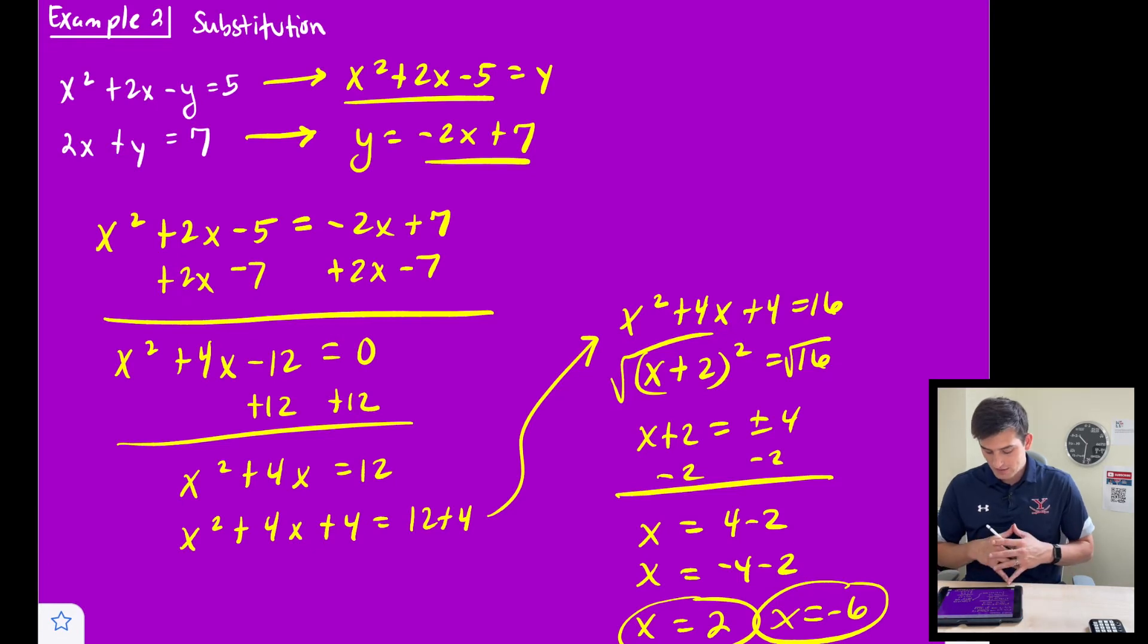But we had, at this, back when we were going to factor it, we could have said add to 4 multiplied to -12 would have been 6 and -2. Right. And then we would set those equal to 0 and we would get 2 and -6. So that just goes to show you, if you have a little brain lapse there and you can't think of how to factor it, go ahead and just move on to a different method. Right. Don't waste your time trying to think of the factors.